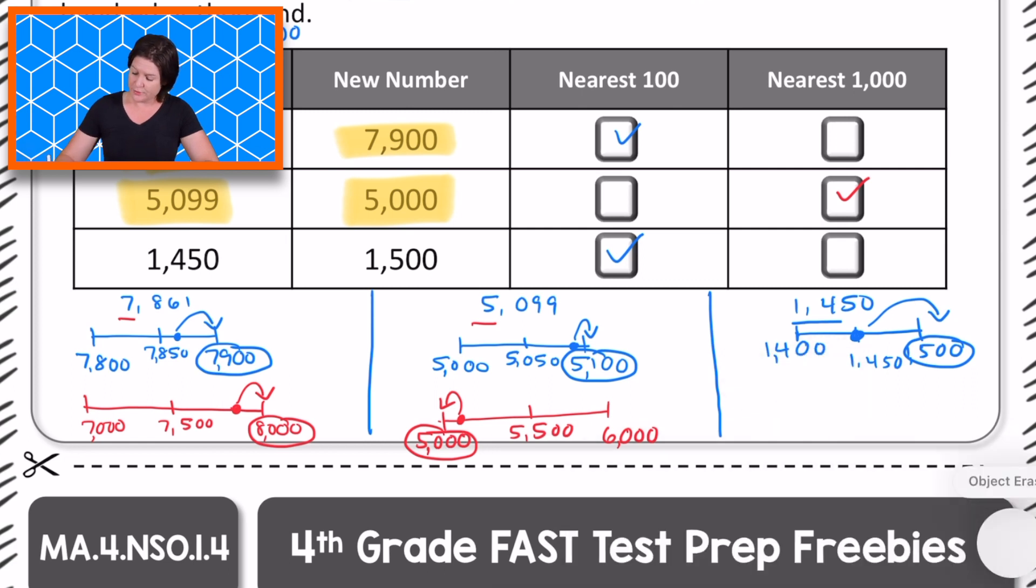Let's check the nearest thousands though. We've got 1,000. It could be between 1,000 and the next thousand would be 2,000. Halfway is 1,500 and 1,450 is pretty close to that halfway mark, but not quite. So it rounds down to 1,000, which is not the new number that was given. So it must be, our answer must be correct. It was rounded to the nearest hundred.